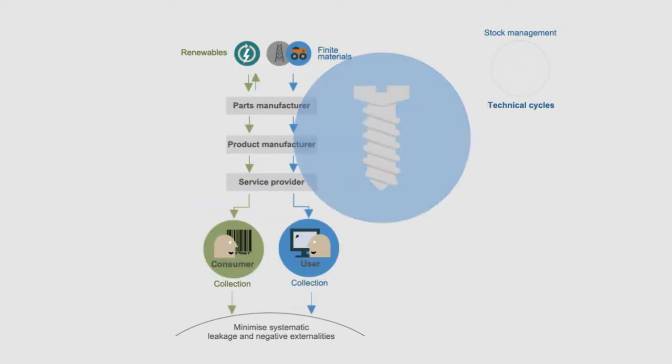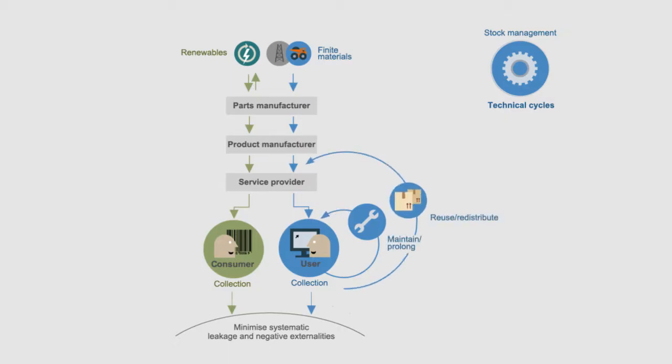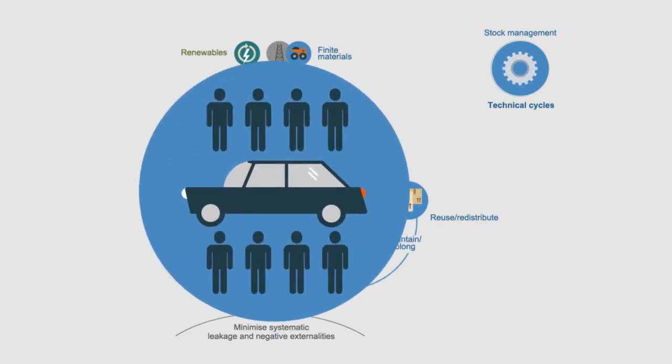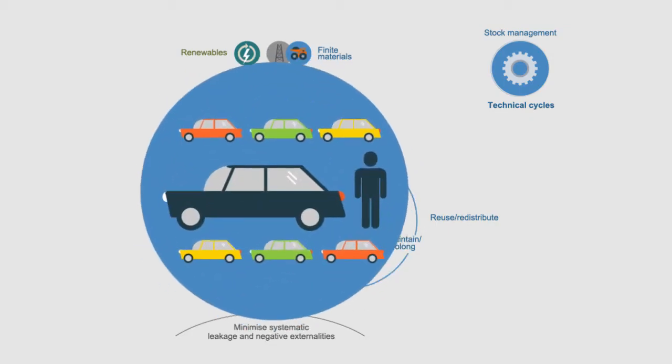The most effective technical cycles involve maintaining and reusing products. This way, the value of a product is preserved and its usage length is increased. For instance, repairing a car or arranging a carpool so that a car is shared between several people is less resource intensive than building additional cars.